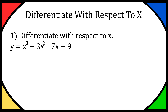So we are differentiating y with respect to x, so we do dy over dx, and now we're going to work with each part of the function separately. If you want to differentiate x cubed, all you have to do is bring the power to the front — you multiply by the power by bringing it to the front — and then you take one away from the original power. So bringing the 3 to the front and then we take one off the power, giving us 3x squared.